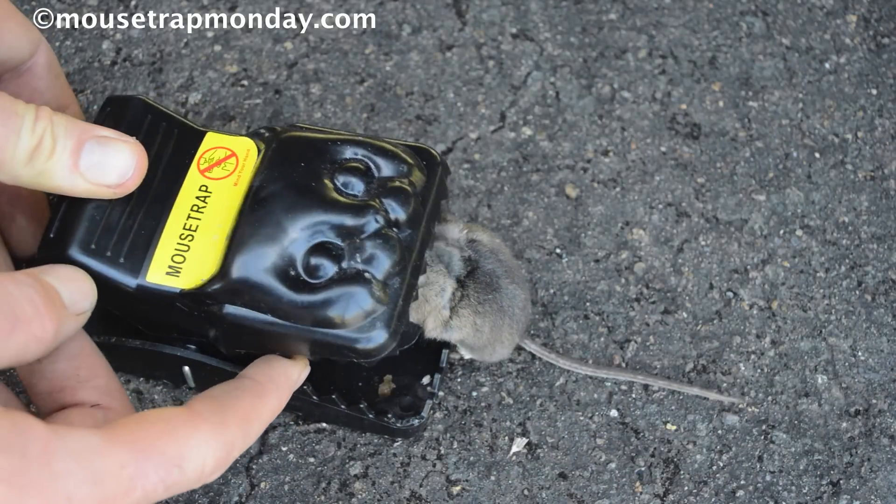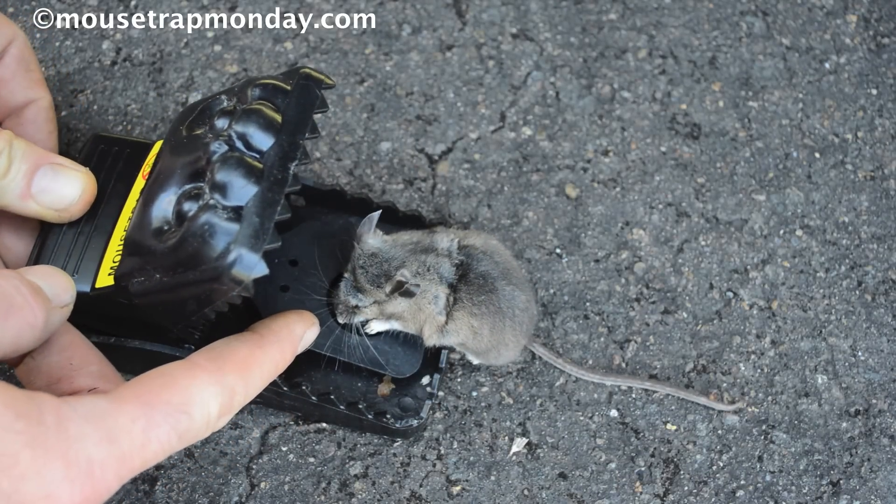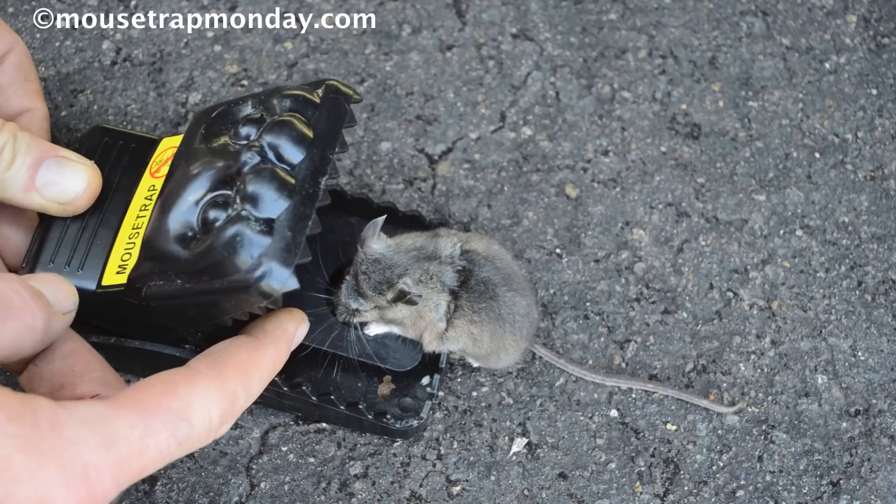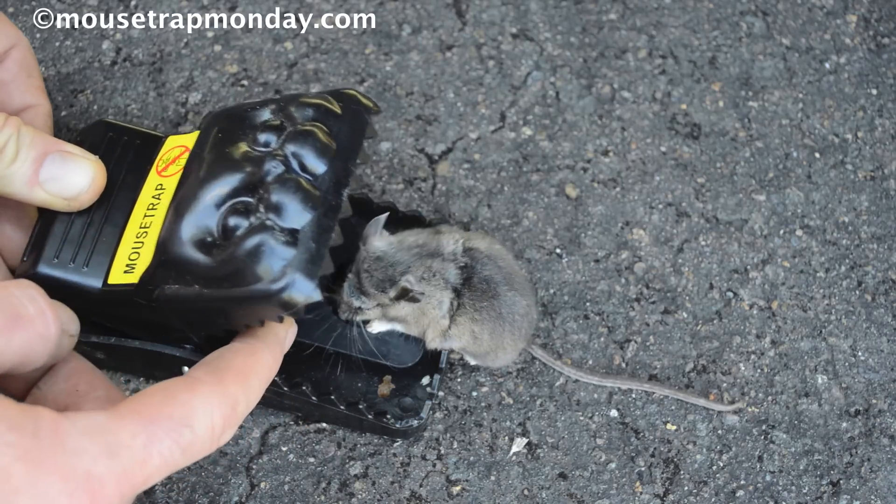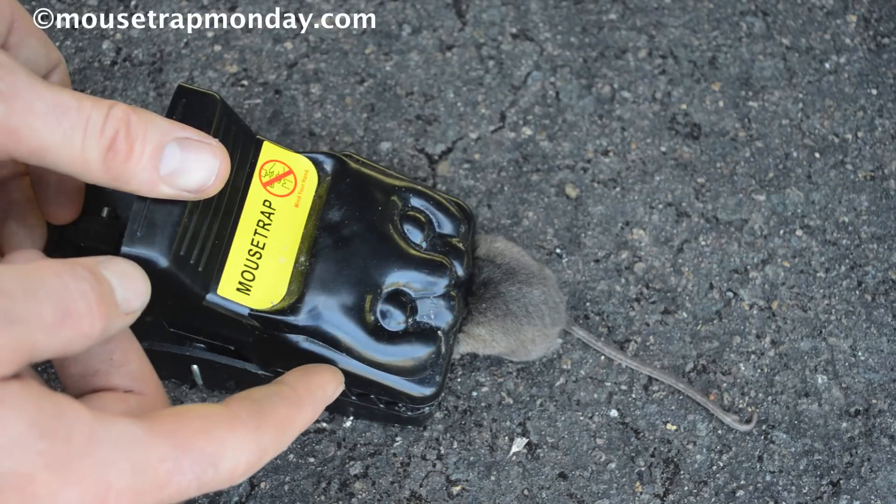Last night we caught a mouse in our Black Cat trap. It came in to get the bait on that trigger pad, which looks like the cat's tongue, and it set it off. And those big plastic jaws came right down on the mouse's body. It almost bit it in half.